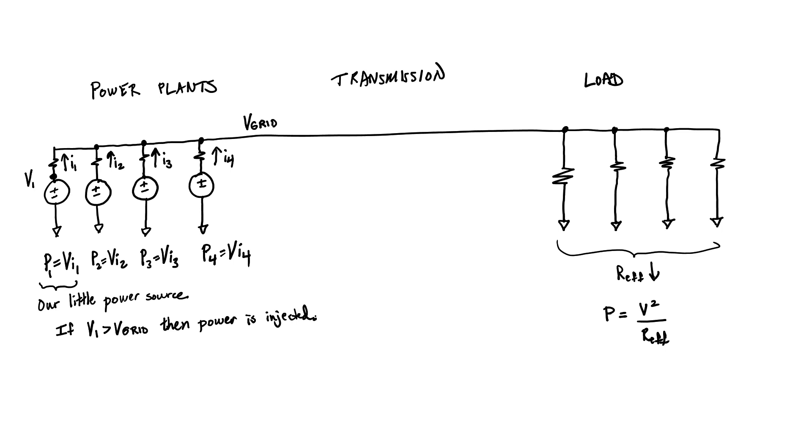But conversely, if the voltage at point V1 is less than the grid voltage, then power is going to flow the wrong way. That would be really bad for our power source because in any battle between the grid and a small power source, the grid is definitely going to win. Our power supply would probably somehow explode.